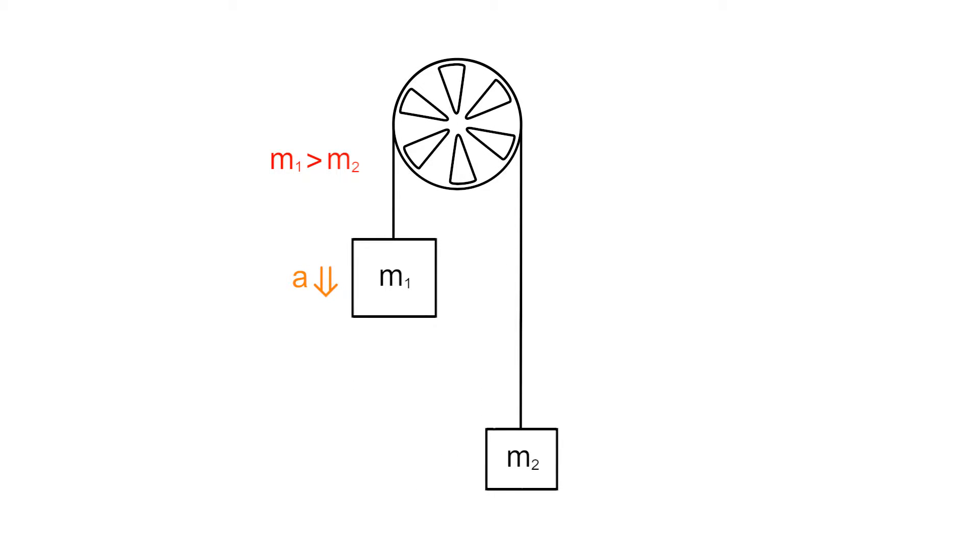M1 will accelerate downward, while M2 accelerates upward. We expect their accelerations to be equal because the string is inextensible. It doesn't get longer or shorter as it moves around the pulley.